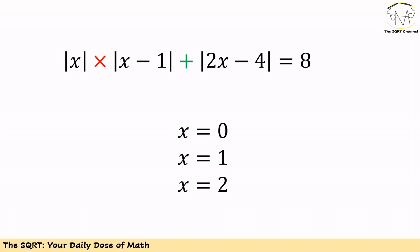Here we have three expressions dealing with absolute values: |x|, |x - 1|, and |2x - 4|. For each expression we need to understand when the absolute value equals the expression itself, and when it equals the negative of that expression.